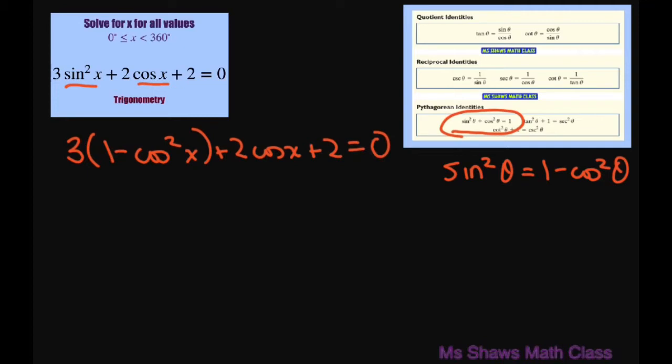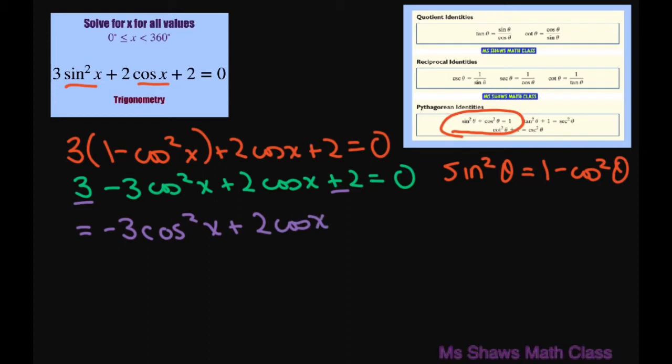All right, so let's clean this up a little bit. 3 minus 3 cosine squared of x plus 2 cosine of x plus 2 equals 0. And writing this in standard form, we're going to add those up. So this is going to equal negative 3 cosine squared of x plus 2 cosine of x plus 5 equals 0.